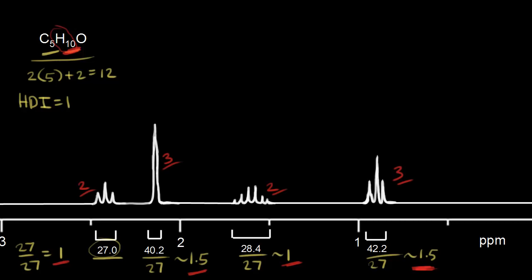Next, let's look at each signal one by one. Starting with this first signal: we have a CH2 since we have two protons. How many neighboring protons do those CH2 protons have? We can figure that out by the number of peaks on the signal.